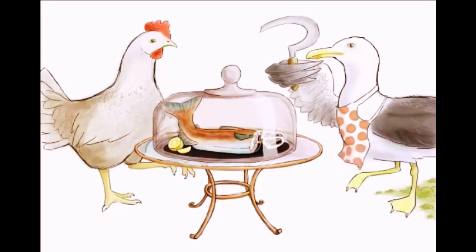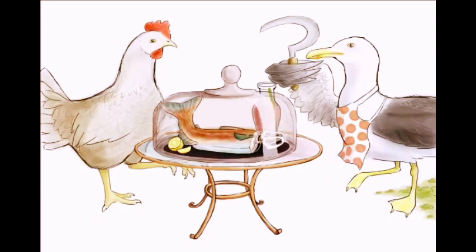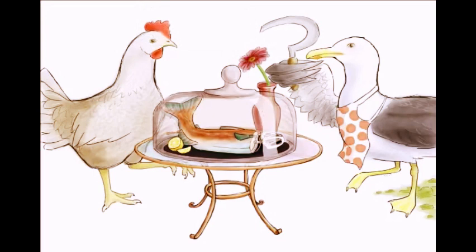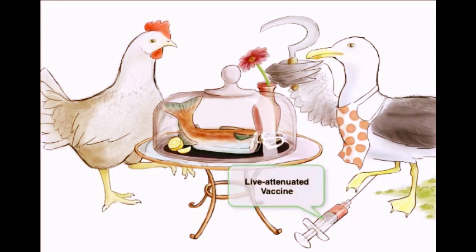Another difference is that Salmonella typhi is treated with an antibiotic, most often a fluoroquinolone. We'll draw a flower on the table closest to the seagull to represent fluoroquinolone. Salmonella typhi also has a live attenuated vaccine — we'll draw a syringe sticking the leg of the seagull, reminding you that it's Salmonella typhi and not Salmonella enteritidis that has the vaccine.